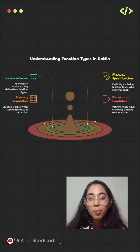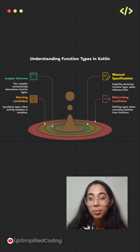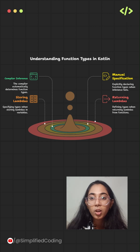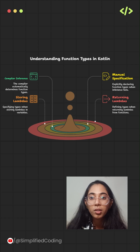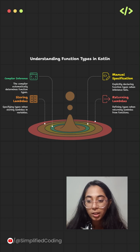This is especially important when the compiler cannot determine the parameter or the return type, or if you are storing a lambda in a variable, or if you are returning a lambda from a function. Lambda expressions can be used in a number of ways.